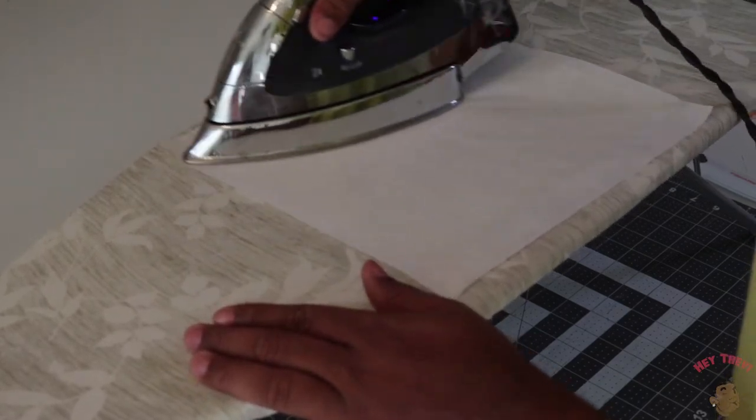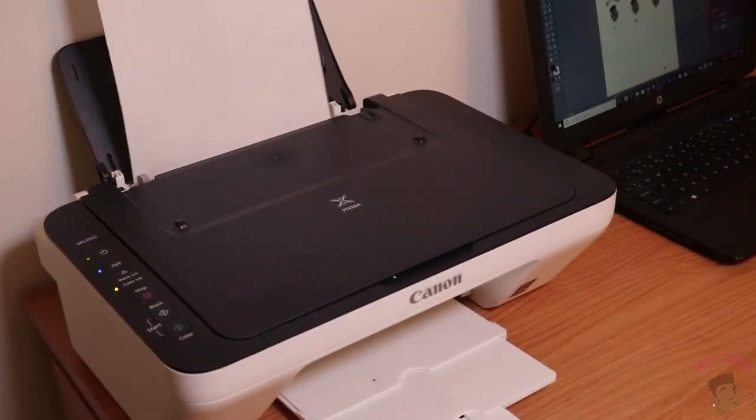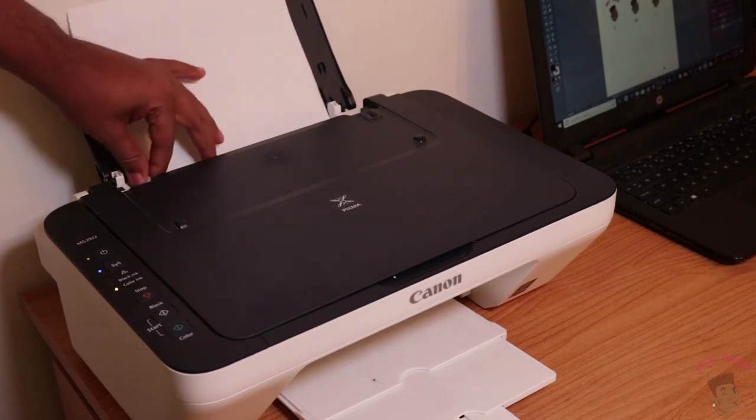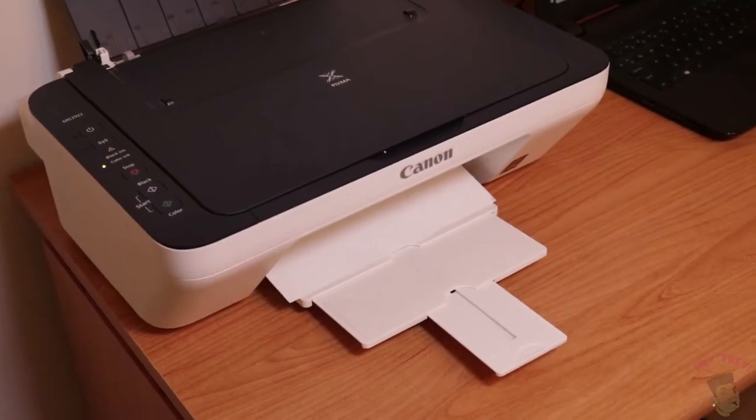Before you print, make sure which side your printer prints on. Mine printed on the side facing me, so I placed the fabric side facing me. After that image is printed, just rip off that freezer paper and you are done. For safe measure, I heat treated it, and that just sets in the ink.